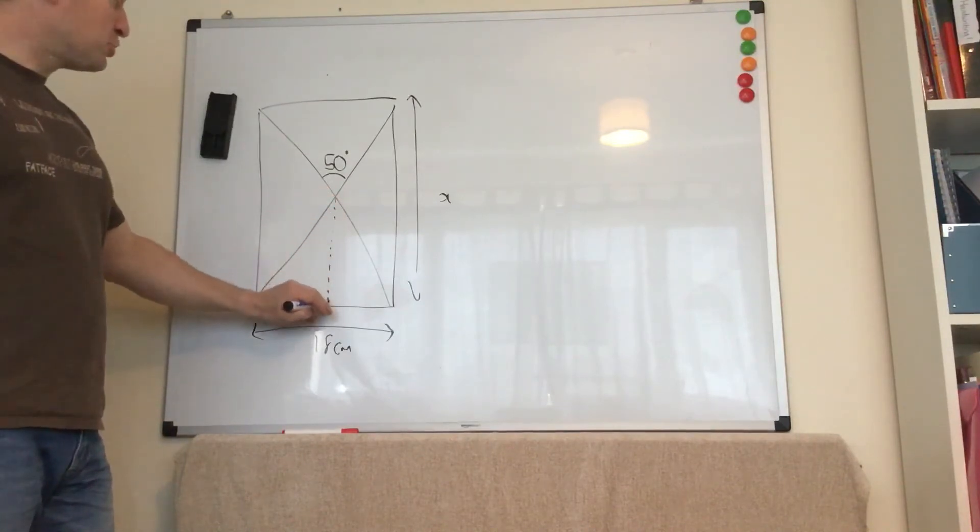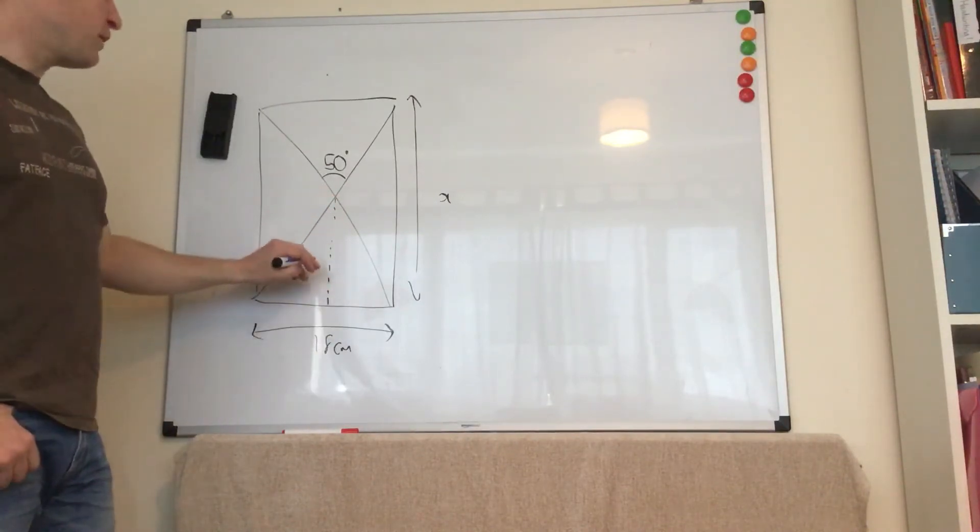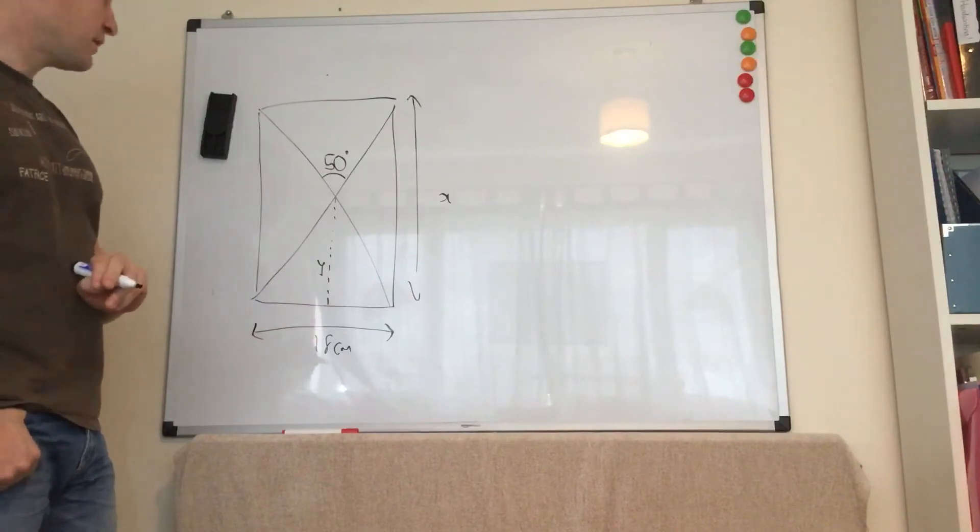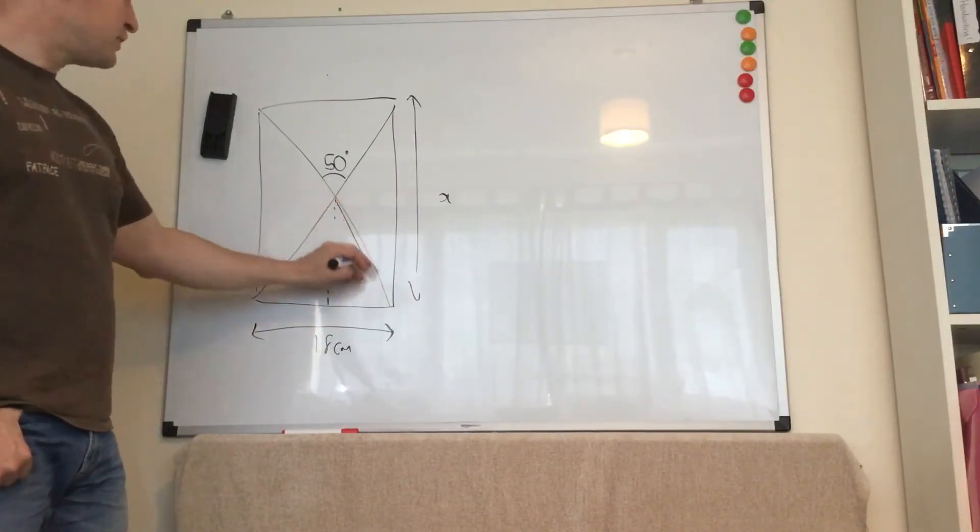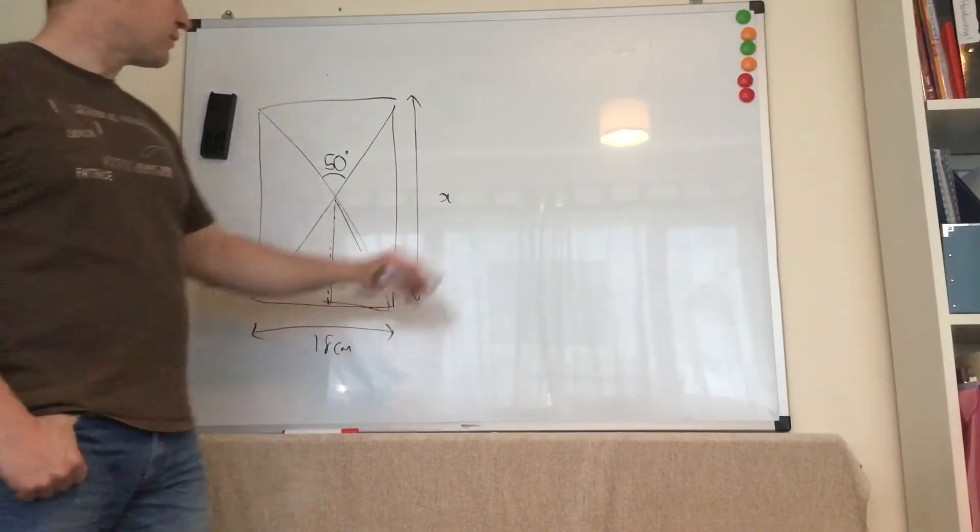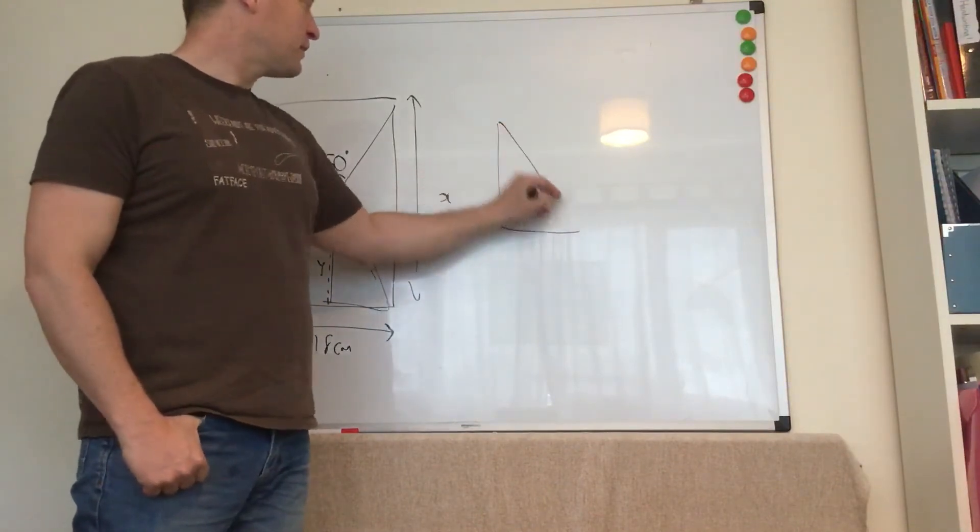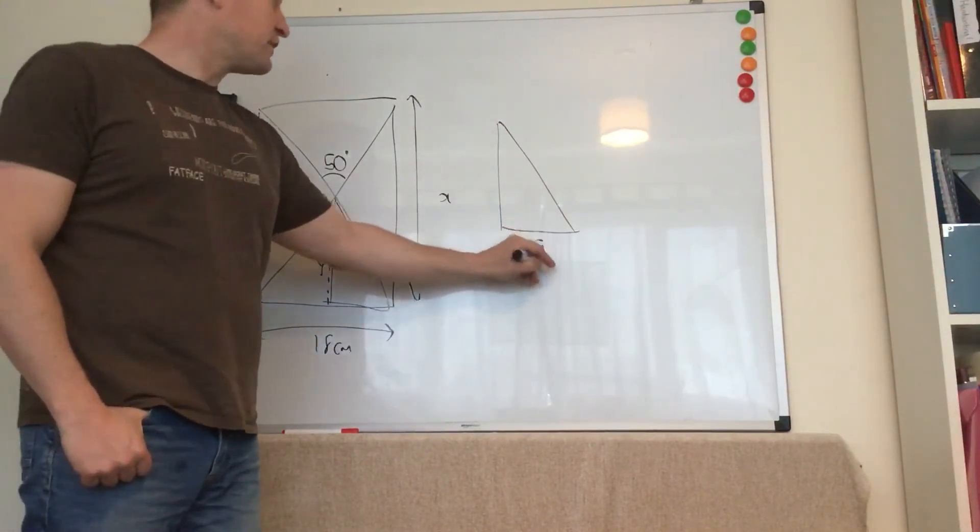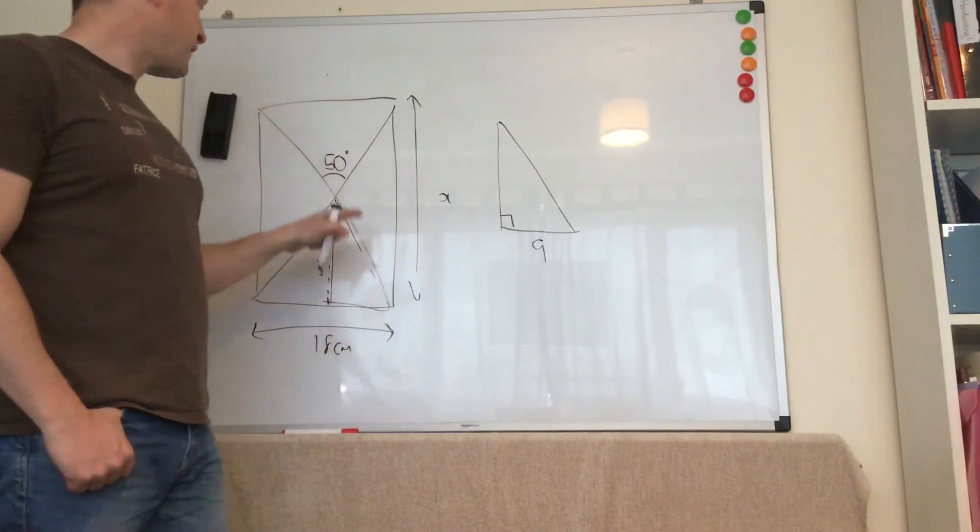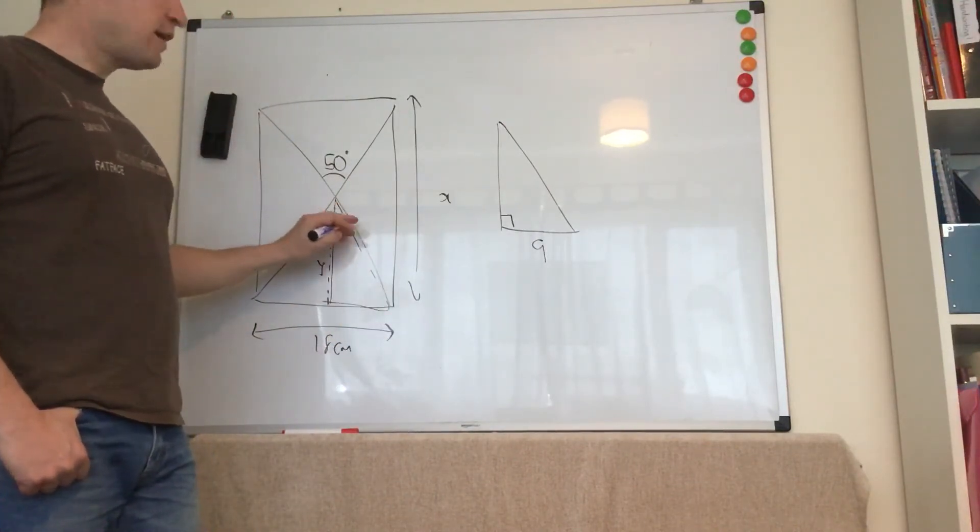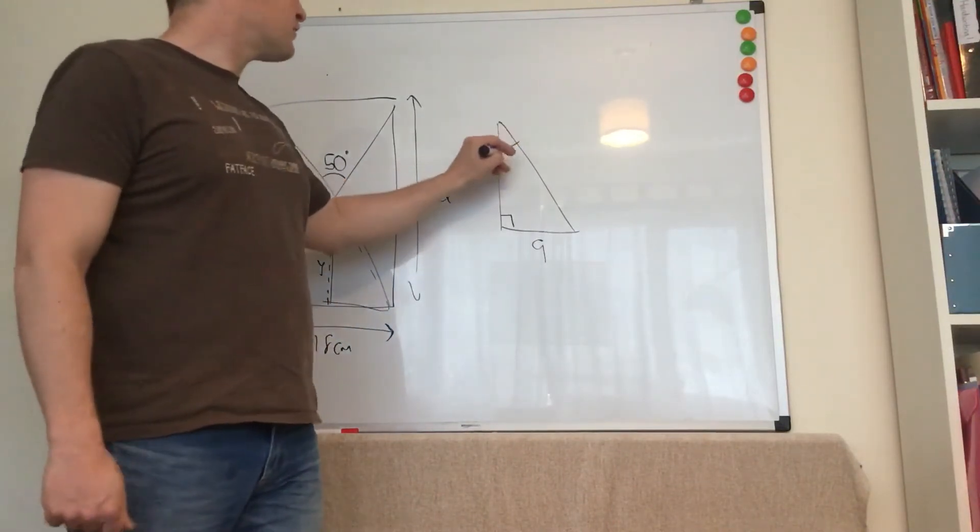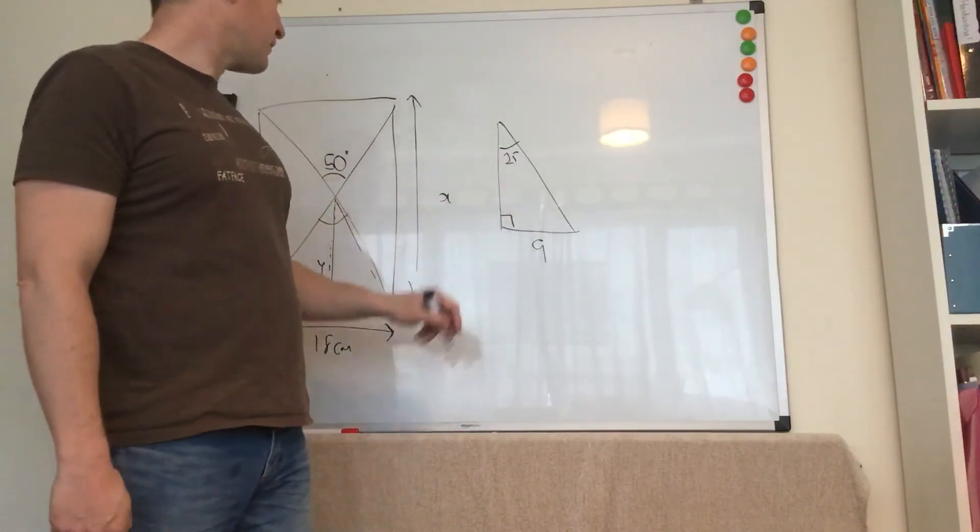X is double that distance. I'm going to call that y again. Okay. And if I look at just this triangle, okay, I'm throwing it out here. That distance is half of 18, so that's 9. Right angle there, and that angle is half of 50, so that's 25.